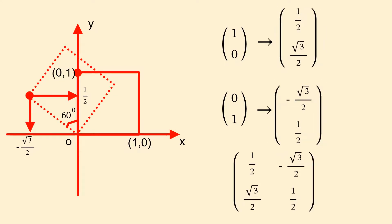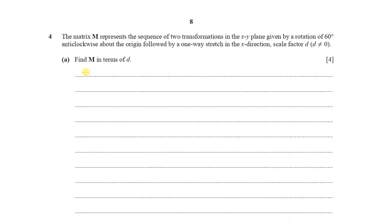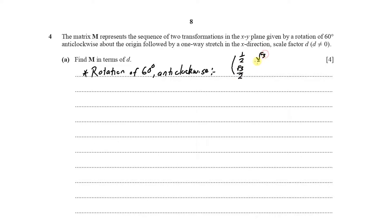From combining these, we can write down the operator matrix for the first transformation — the rotation of 60 degrees anticlockwise about the origin. The matrix is: top row (½, −√3/2), bottom row (√3/2, ½).